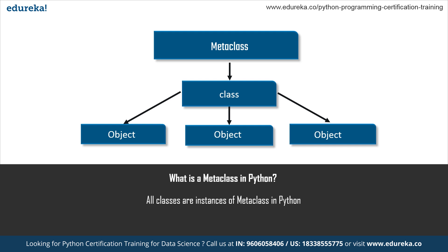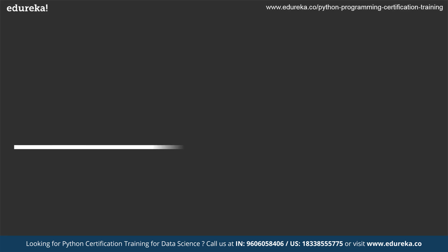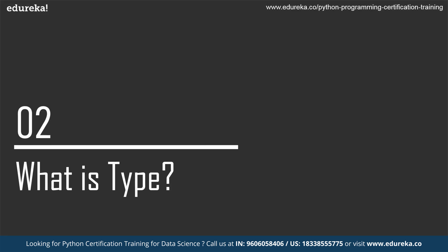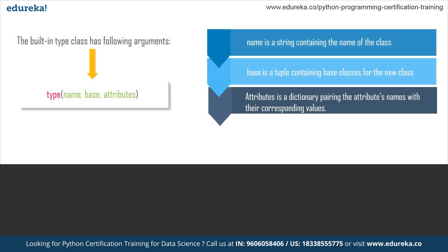Just as we define a class to define the behavior of how instances are going to behave, similarly there is a metaclass which defines the behavior of any class that we declare in Python. Type is basically the metaclass that we have in Python, and the instances of type are the classes that we use in Python.